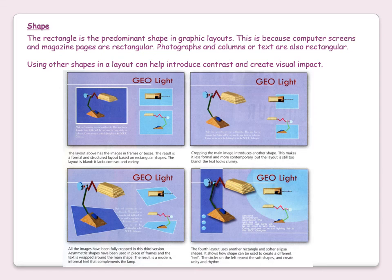Cropping the main image introduces another shape, making it less formal and more contemporary, but the layout can still look bland with clumsy text. When all images are fully cropped and asymmetrical shapes are used in place of frames, with text wrapped around the main image, the result is a modern, informal feel that complements the product. A fourth layout using rectangles and softer ellipse shapes shows how shape can create a different feel, with circles on the left repeating soft shapes to create unity and rhythm.